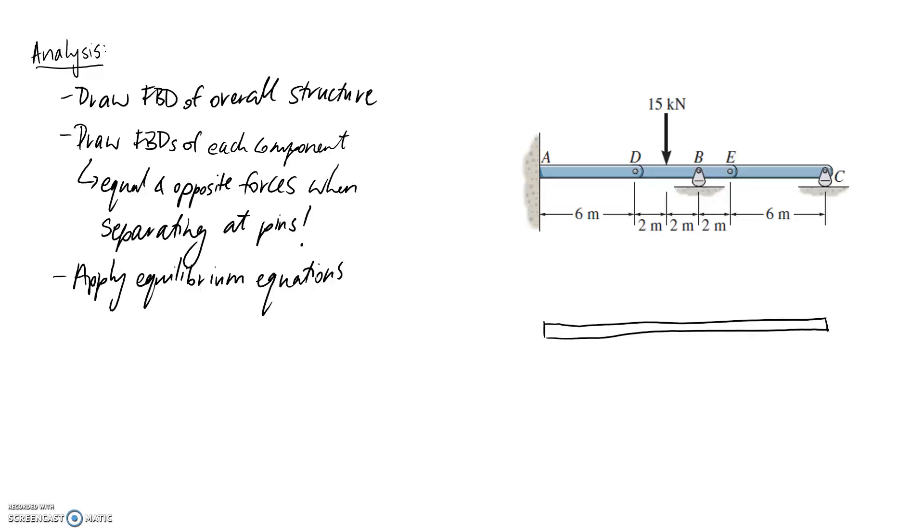So draw the free body diagram of the overall thing. So pulling it out, we've got this 15 kilonewtons acting down. We know we're going to have some support reactions. So we've got one at B here, which is going to push back up, BY. And we've got one at C, which I'll assume pushes back up, CY. And we've got a fixed support over here at A.